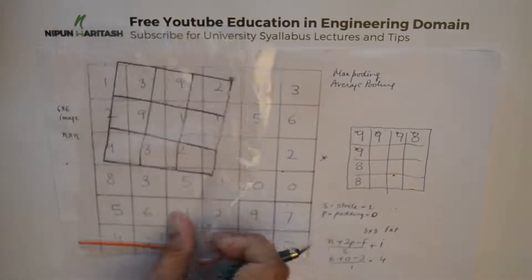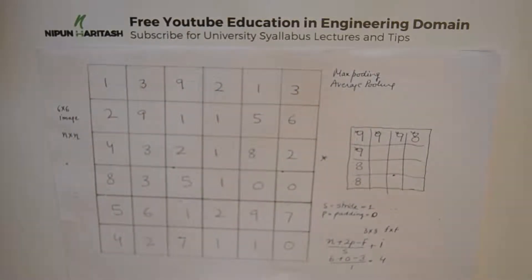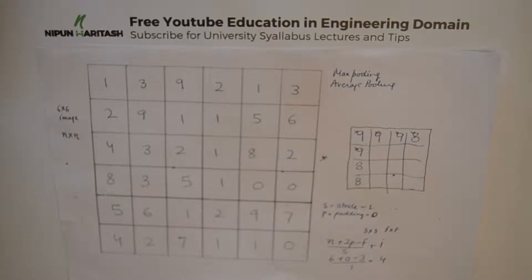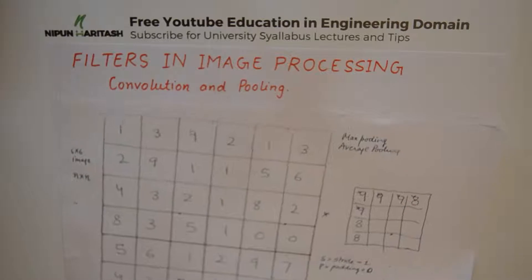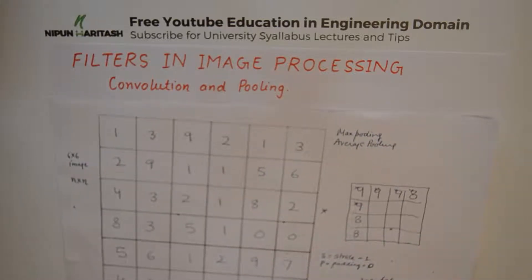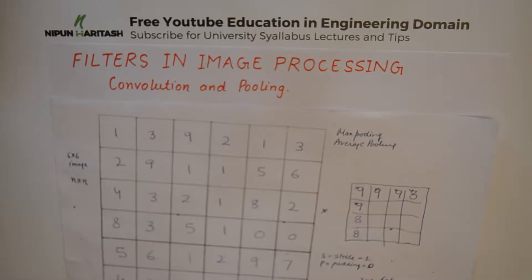So these are the two ways filters can be used on images to perform certain operations and get the desired processed output. I hope this quick tutorial on the usage of filters in image processing — covering convolution and pooling — was helpful. I'll see you in the next video. Take care, bye-bye.